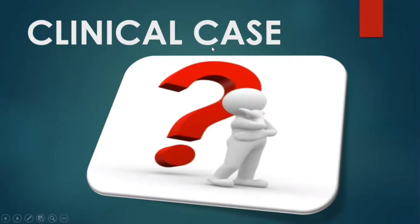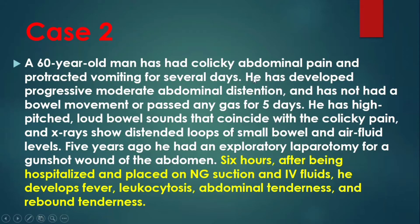Today we will discuss a clinical case of acute abdomen. We will make our diagnosis and learn how to manage our patient. A 60-year-old man has had colicky abdominal pain and protracted vomiting for several days. He has also developed progressive moderate abdominal distension and has not had a bowel movement or passed any gas for five days.